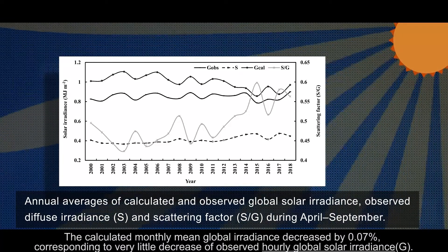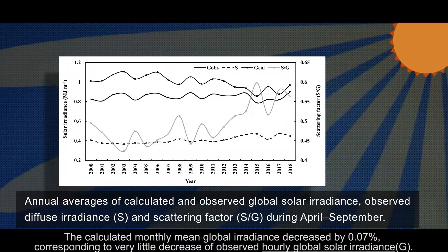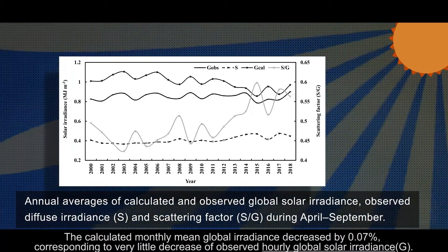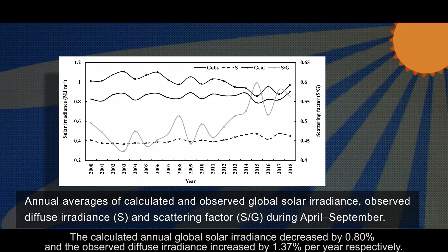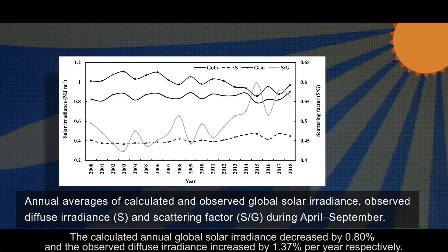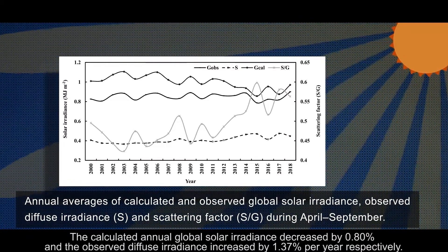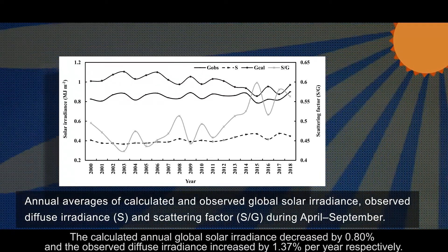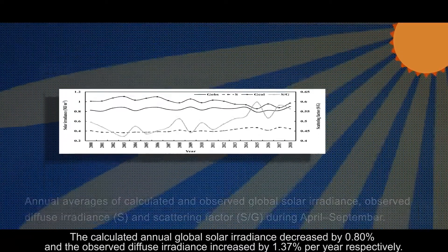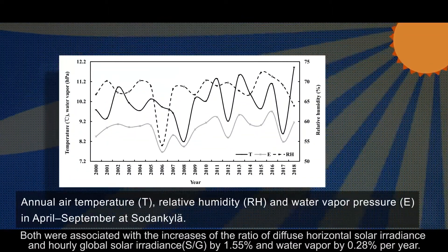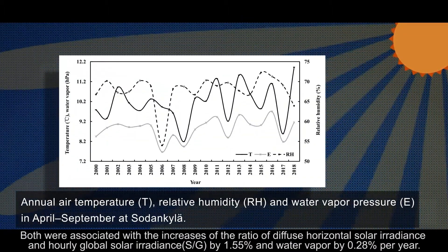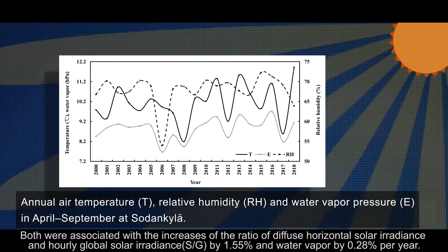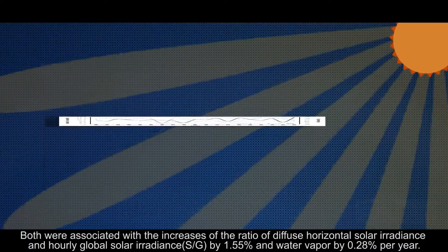The calculated monthly mean global irradiance decreased by 0.07%, corresponding to a very little decrease of observed hourly global solar irradiance. The calculated annual global solar irradiance decreased by 0.8%, and the observed diffuse irradiance increased by 1.37% per year. Both were associated with increases of the ratio of hourly global to diffuse horizontal solar irradiance by 1.55% and water vapor by 0.28% per year.